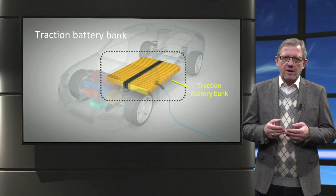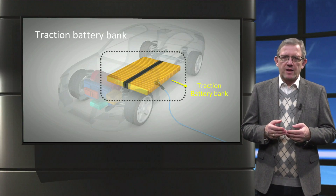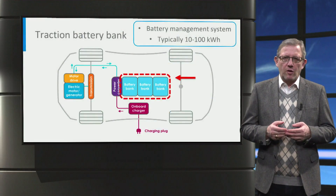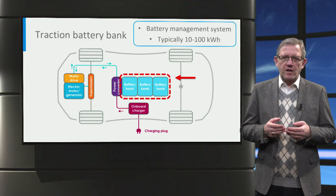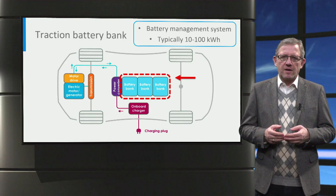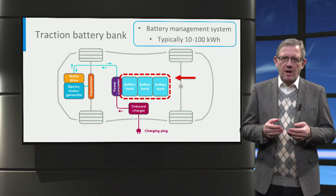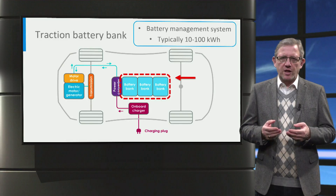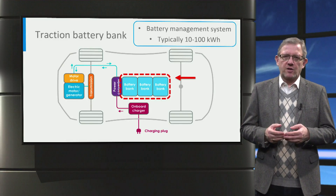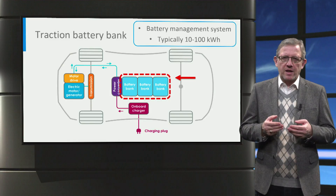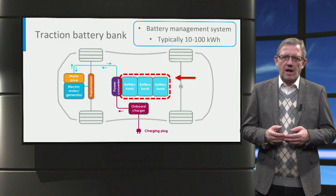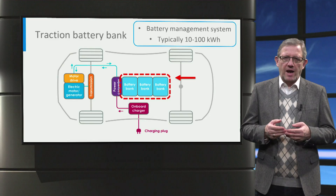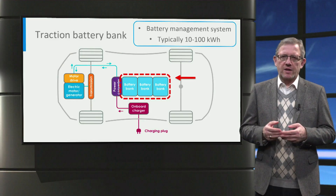Next is the high voltage traction battery, which is the heart of any electric vehicle. Generally the battery is located at the bottom of the car, but this can vary depending on the manufacturer. The role of the battery is to store energy for the propulsion of the vehicle. The battery has a battery management system that monitors and regulates the battery charging characteristics such as voltage, current, temperature and state of charge. The energy content of a battery is normally expressed in kilowatt hours. Nowadays electric cars have battery sizes in the range of 10 to 100 kilowatt hours.